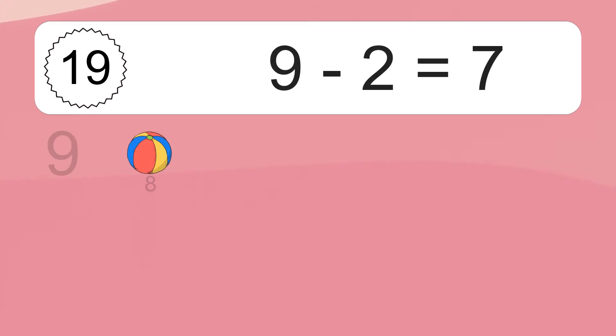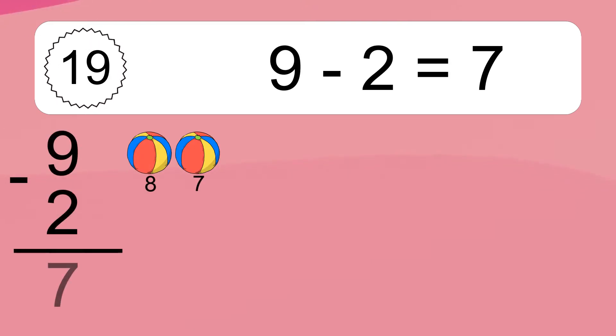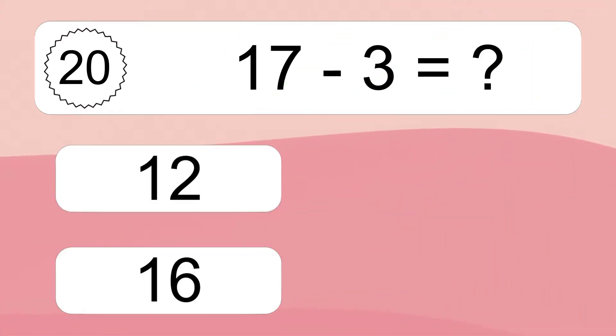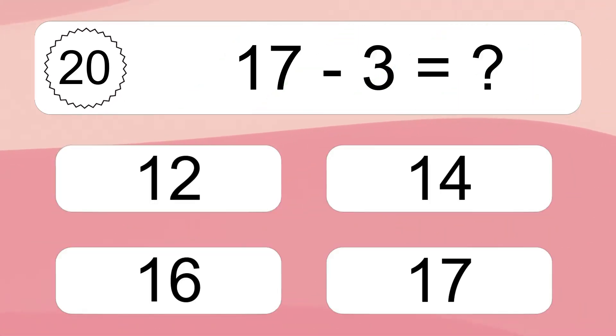9 minus 2 equals 7. Let's count it. 8, 7. 17 minus 3 equals what?